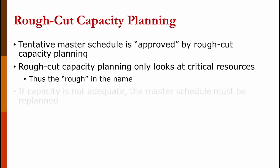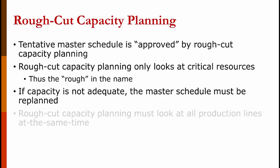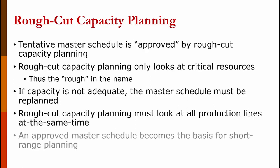If there's not enough capacity, then we either have to come up with a new master schedule, or we have to figure out how to get more capacity. Since we're still at the rough cut phase, rough cut capacity planning must look at all the production lines at the same time. Once we finally get to the point that we've got an approved master schedule, that becomes the basis for short-range planning.